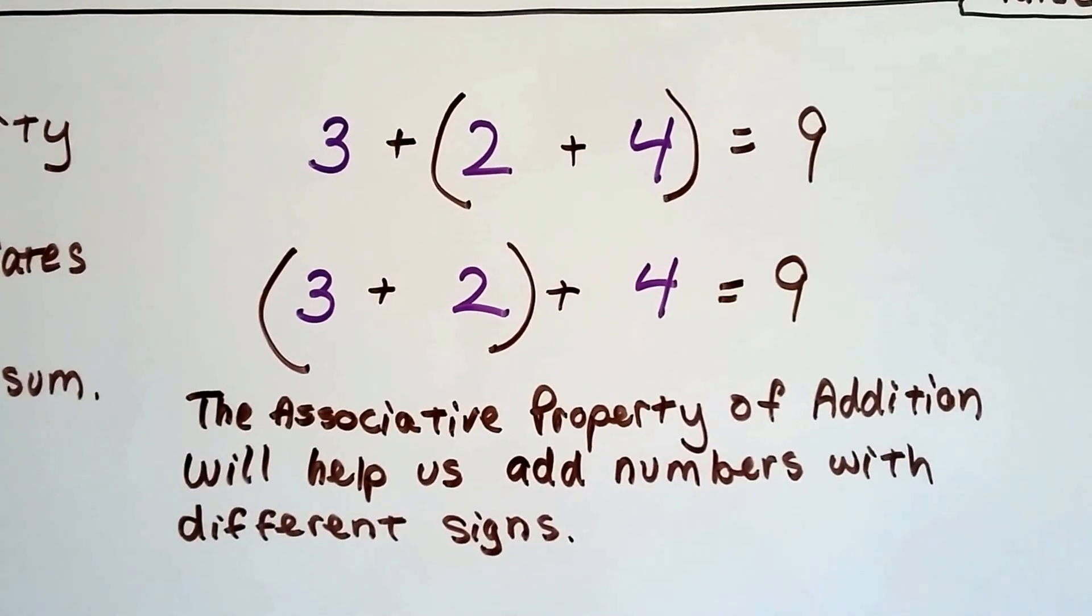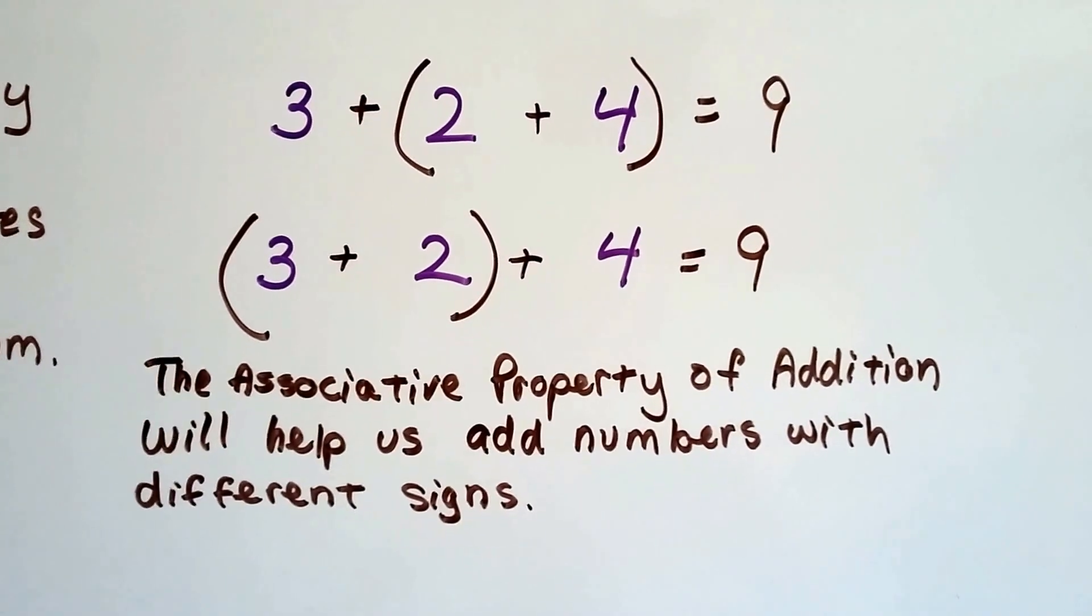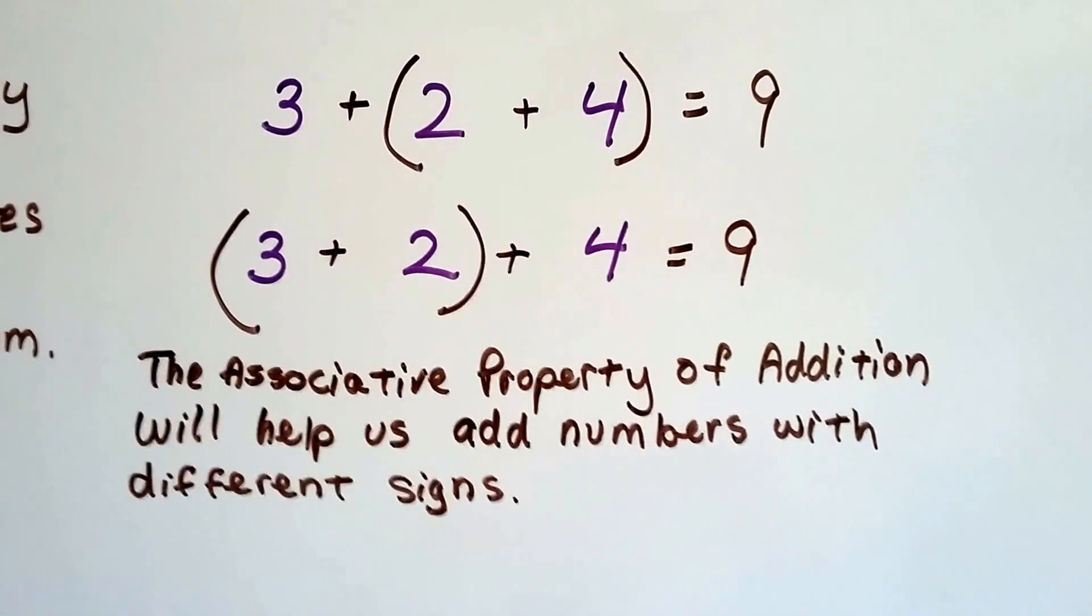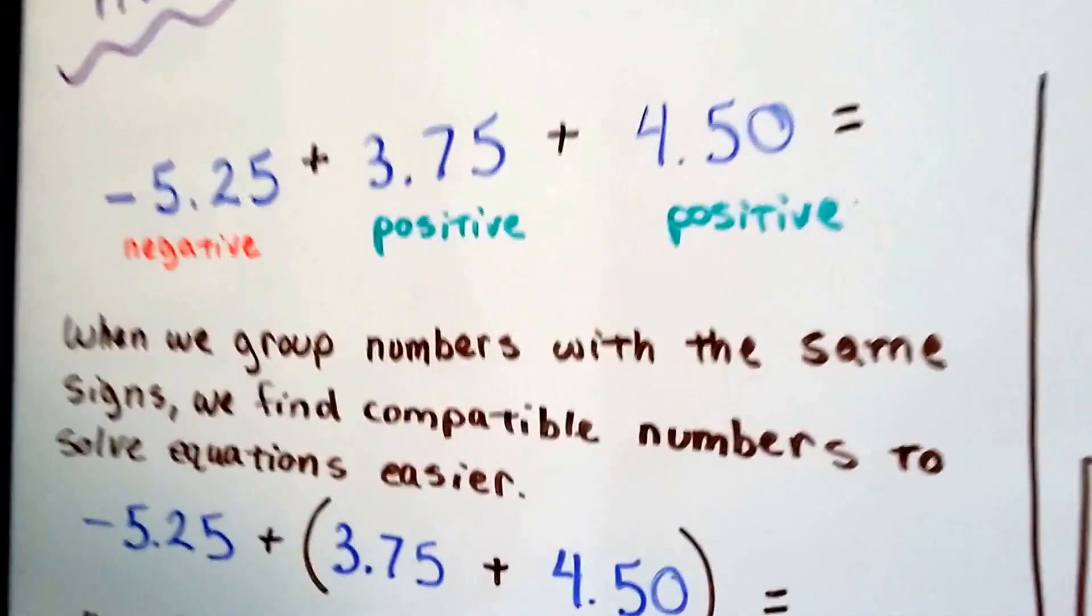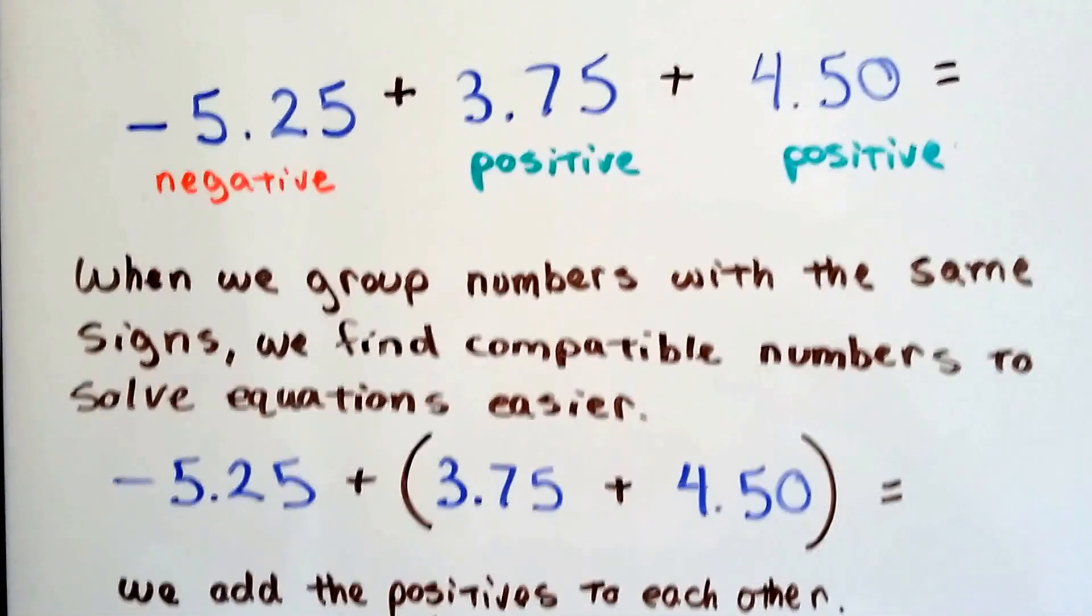When we group the 3 and the 2 together, it equals 5, and we add the 4, it equals 9. They're the same. The associative property of addition is going to help us add numbers with different signs. So we have a negative and two positives here, and when we group numbers with the same signs, we find compatible numbers to solve equations easier.